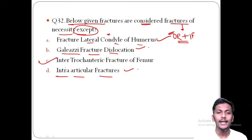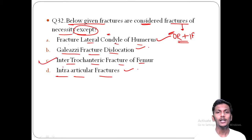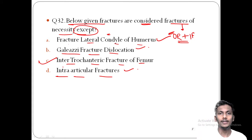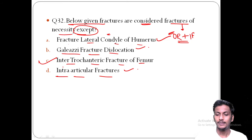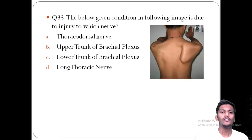The exception — option C — is the intertrochanteric fracture of the femur, where the fracture line runs between the greater and lesser trochanter of the femur. This is not considered a fracture of necessity.